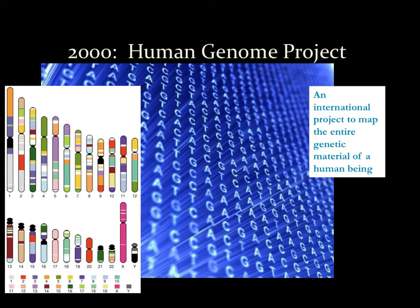A little more history about the power of knowing the structure of DNA: the Human Genome Project was quite a big deal. It was an international project to map — basically to list — all of the individual points of the human genome. In other words, the entire genetic makeup of a human being was to be mapped out, with the sequences of chemicals in the molecules identified, and every single gene in the human body identified.